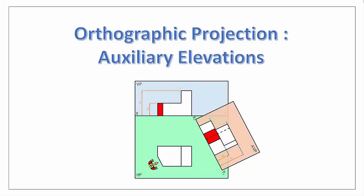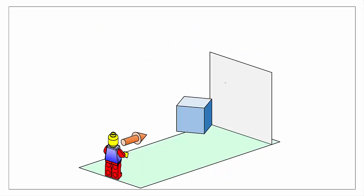Hello and welcome back to our webcast series on the topic of orthographic projection. In this video we're going to look at how to create an auxiliary elevation, or simply put, how to get a view from an object when looking at it from a different direction. To do that we'll begin by looking at the basic principles we've already seen in our orthographic projection.